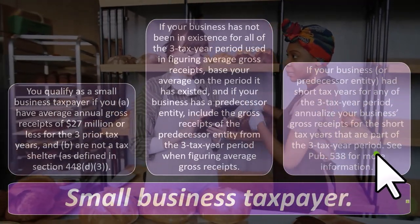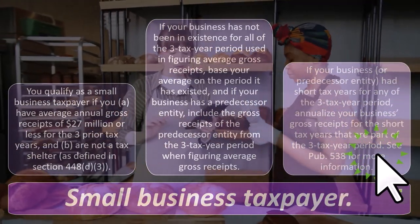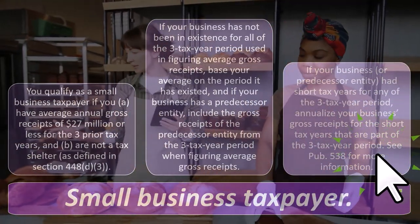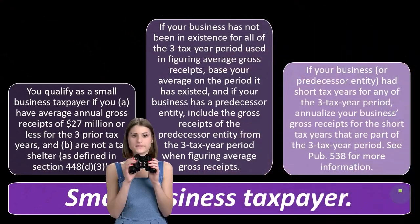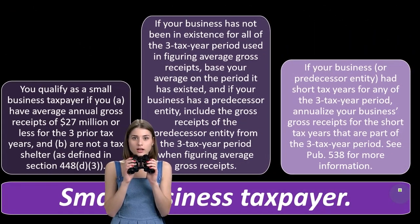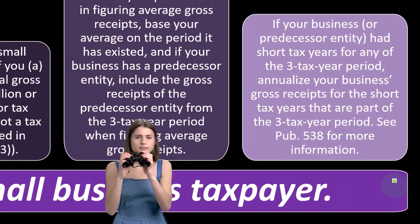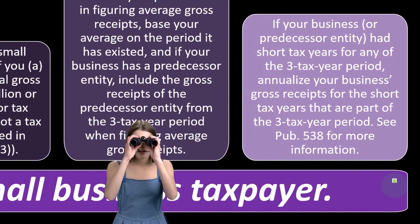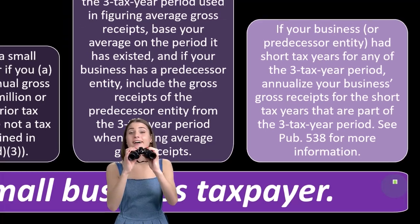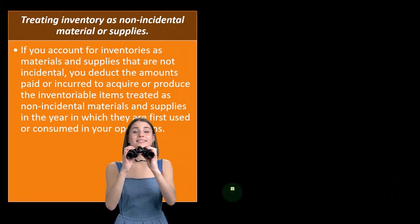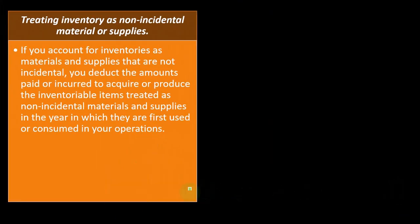If your business or predecessor entity had short tax years for any of the three-year period, annualize your business gross receipts for the short tax years that are part of the three-year period. You can see Publication 538 for more information if you want to drill down on that.